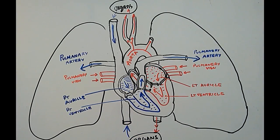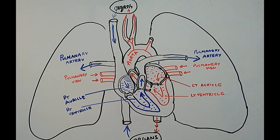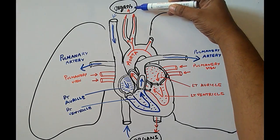Mammals have double circulation. Double circulation means blood flows through the heart two times before going to any body part. For the sake of purification and pumping, the blood has to go through the heart two times to get itself purified.